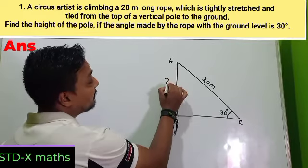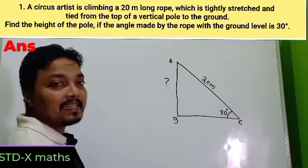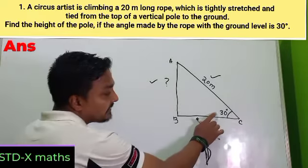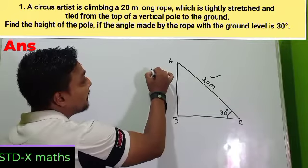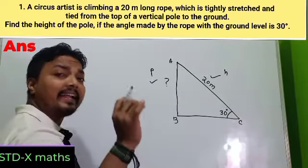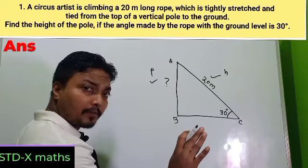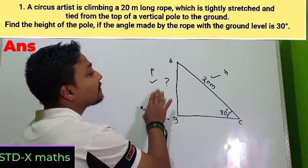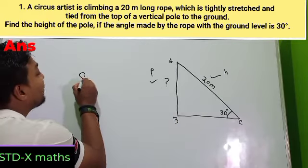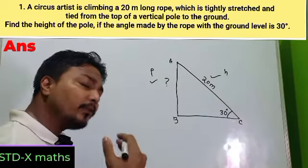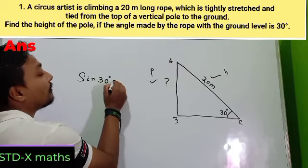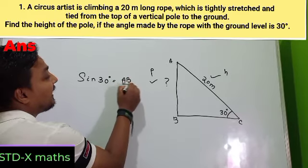You need to find the height of the pole. Always give focus to which side is given and which side is asked. For this angle, AB is P and AC (the rope) is H. So you need the P and H related trigonometric ratio — either sine or cosec. I am using sine: sin 30° = AB/AC.